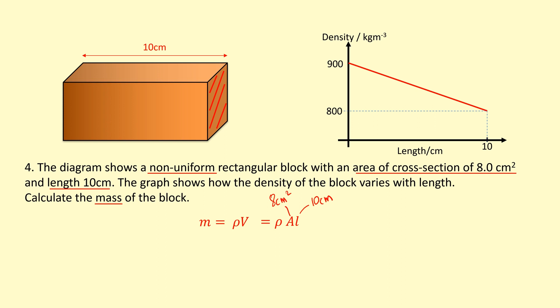Because the density is changing from 900 to 800, I can use the average. And it's changing in a linear way, so that's why I can take the average. So what I do is 900 plus 800 divided by 2. That gives me an average density of 850 kilograms per meters cubed.